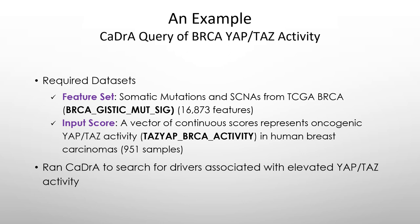We query this feature set based on an input score that measures the per-sample activity of YAP/TAZ, the two important regulators of the HIPPO pathway. This score represents the projection onto the TCGA breast cancer dataset of a gene expression signature of YAP/TAZ knockdown derived from a breast cancer cell line. And here we are asking the question: what is the combination of genetic features — mutations and copy number alterations — that best explains YAP/TAZ activity?